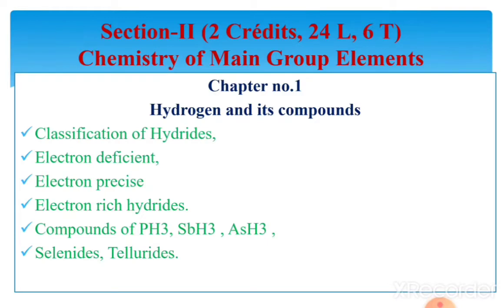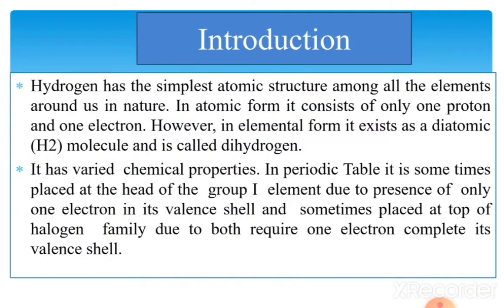The chapter on hydrogen and its compounds covers sub-topics including classification of hydrides: electron deficient, electron precise, and electron rich hydrides; compounds of PH3, AsH3, SbH3, and selenides and tellurides. Introduction: hydrogen has the simplest atomic structure among all elements. In atomic form, it consists of only one proton and one electron. In elemental form, it exists as a diatomic molecule H2, called dihydrogen.